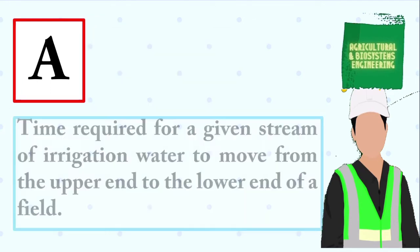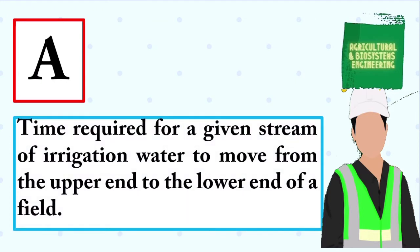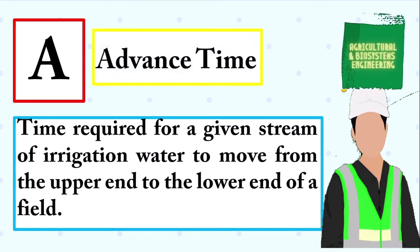Time required for a given stream of irrigation water to move from the upper end to the lower end of a field. The answer is: advanced time.